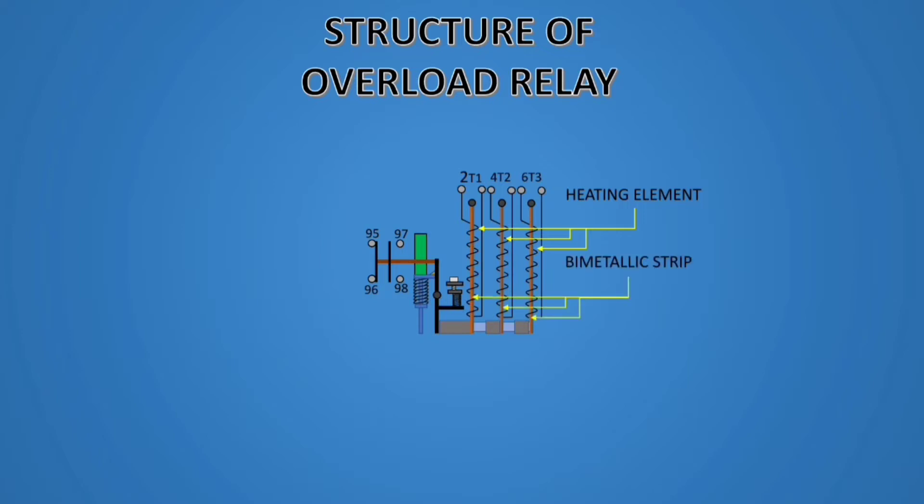The bimetallic strip is made of two separate strips of metal stuck together. These two strips expand to a different extent when heated. When the strip is heated, one strip will be longer than the other. Therefore, the bimetallic strip will bend.